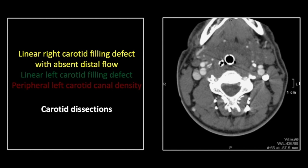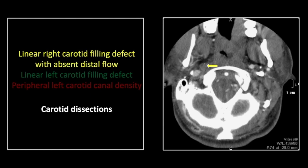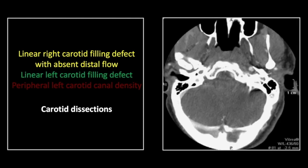Our next case is carotid dissections. On this lower cut, you can see a linear filling defect in the proximal right internal carotid artery. Higher up, near the skull base, there is no flow at all in that right internal carotid artery. At the level of the carotid canal, that vessel is empty of contrast, in marked contrast to the opposite side. Perusing the opposite side internal carotid artery, you can appreciate a slightly irregular contour and a linear filling defect. This is a common location for traumatic carotid dissections — at the base of the internal carotid, above the bifurcation, but also here at the skull base.